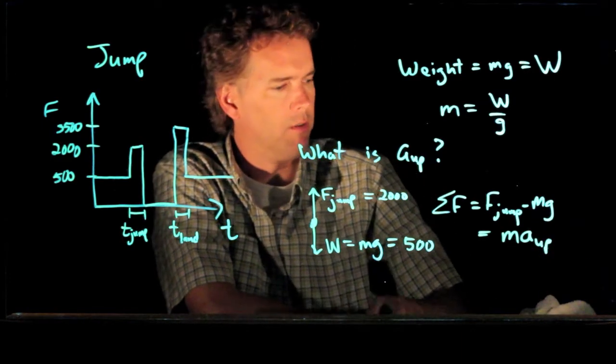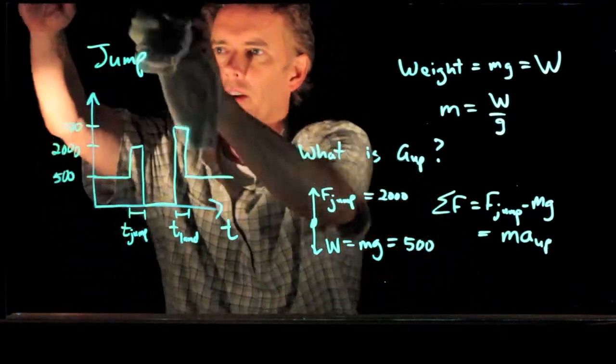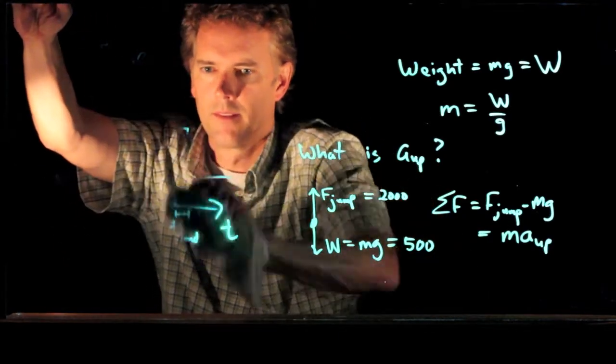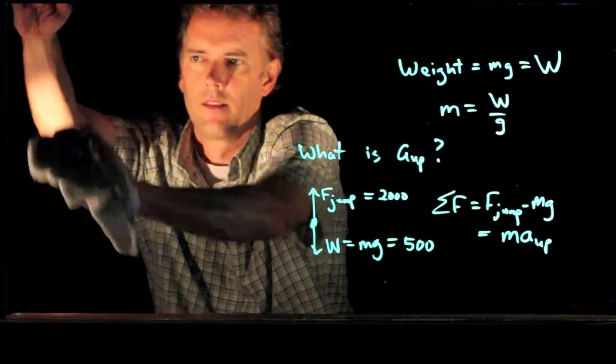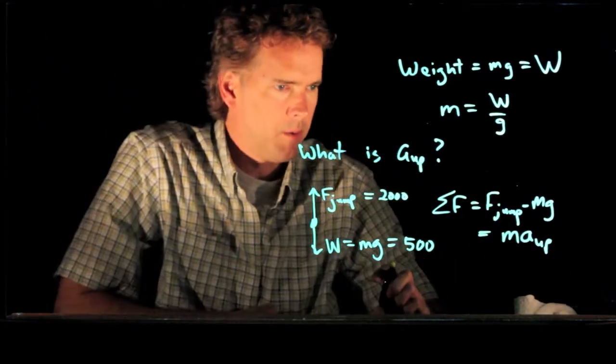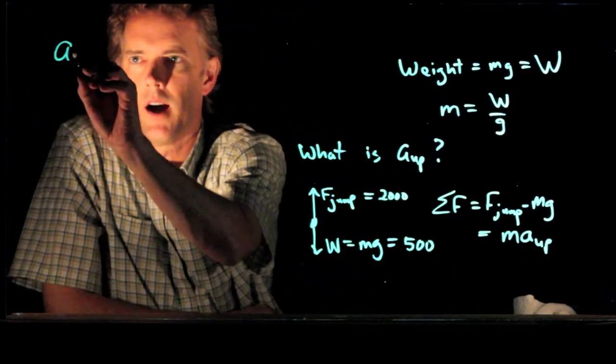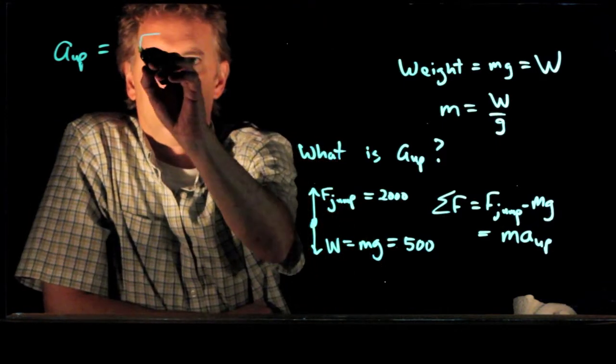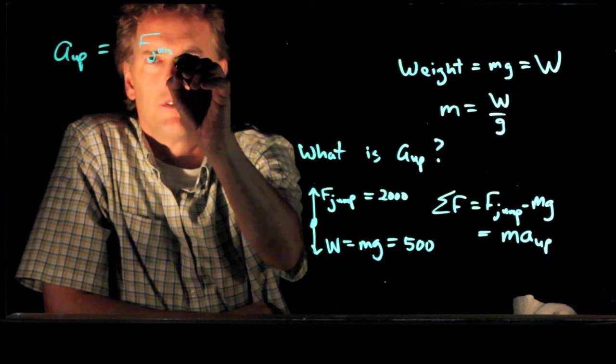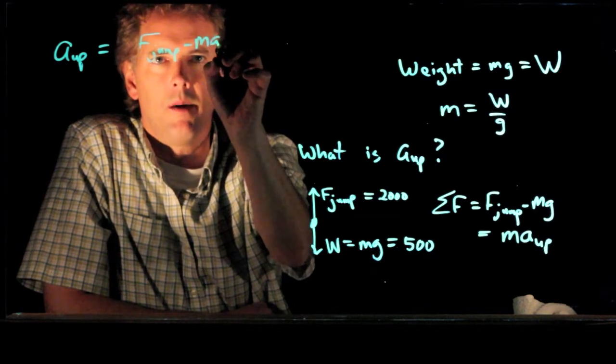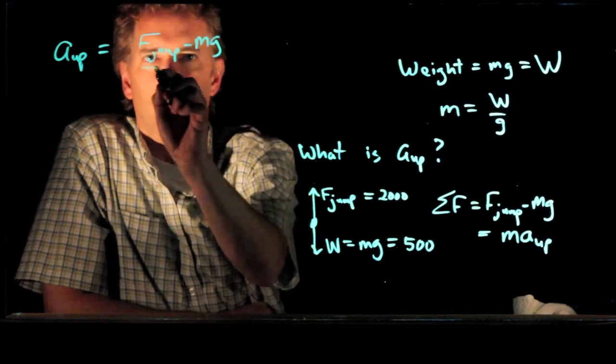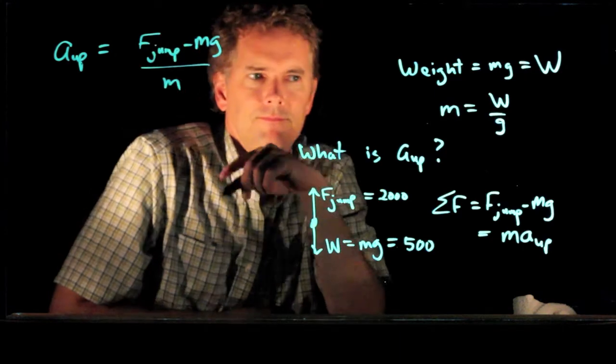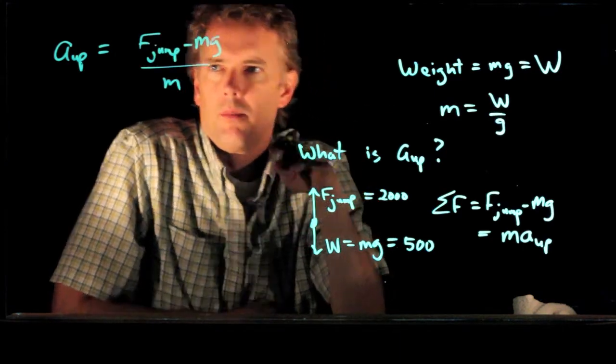All right, so now we can solve that equation for the acceleration going up. And if we do that, what do we get? We get a up equals F jump minus mg all over m. And now we know all those numbers.